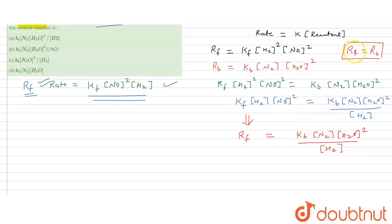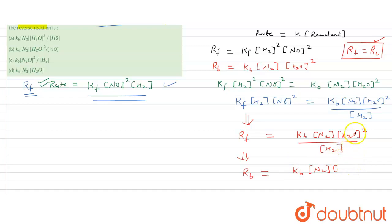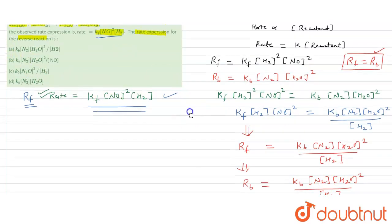Since the rate of forward direction equals the rate of backward direction at equilibrium, the rate expression for the reverse reaction is: rb = kb into concentration of N2 into concentration of H2O squared, divided by concentration of H2.